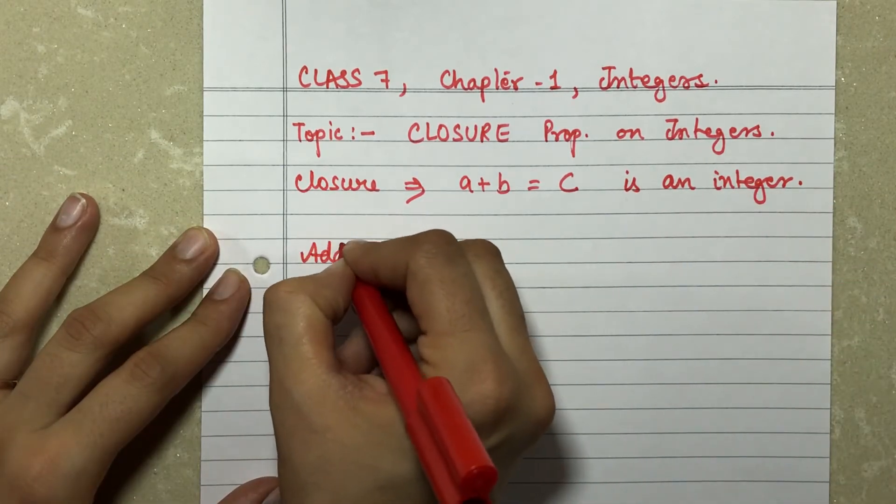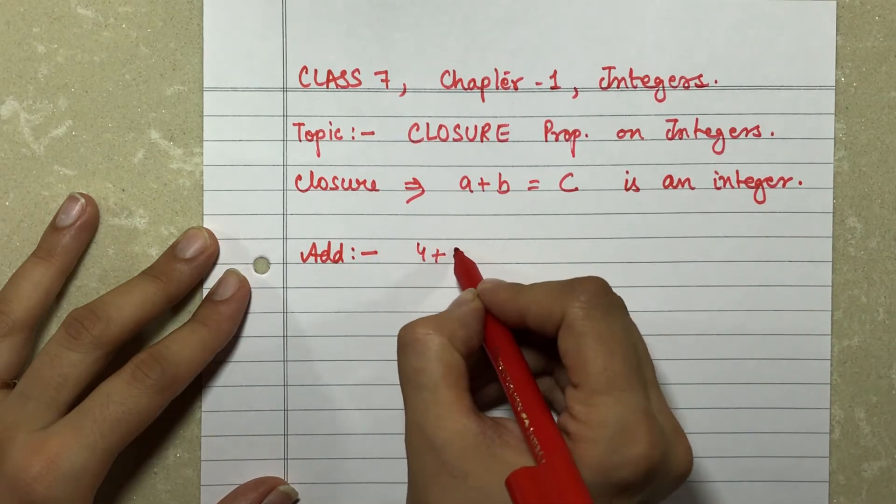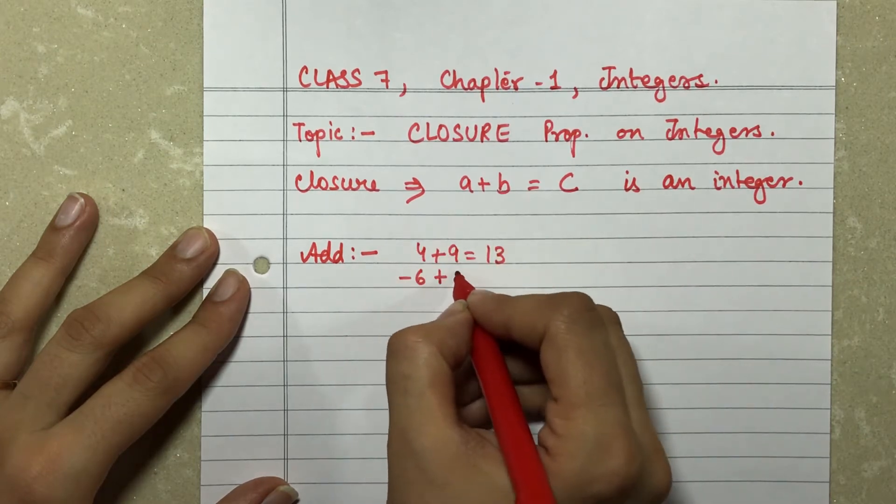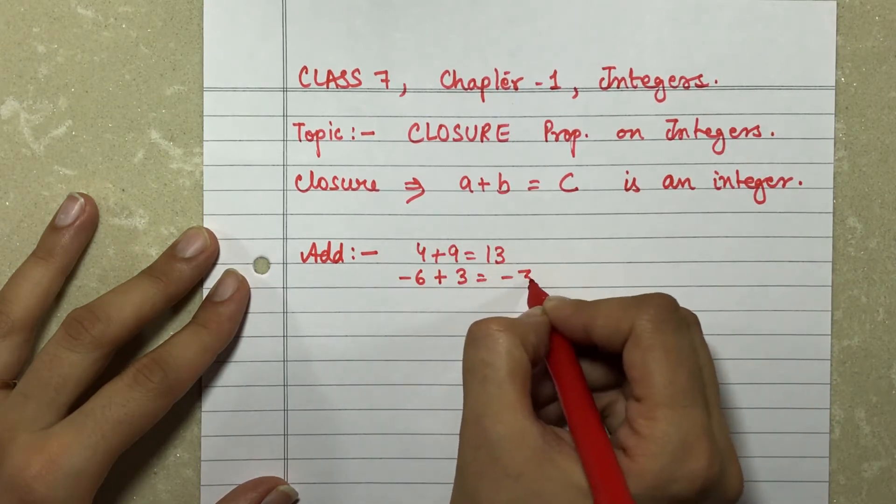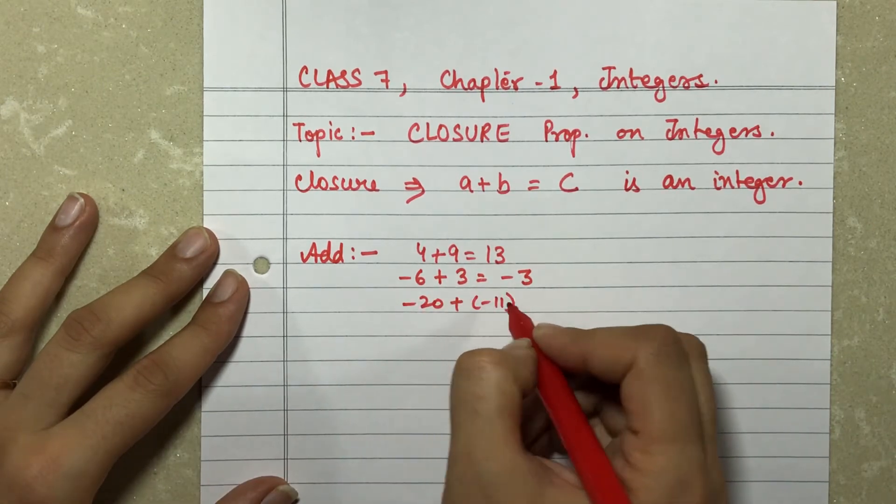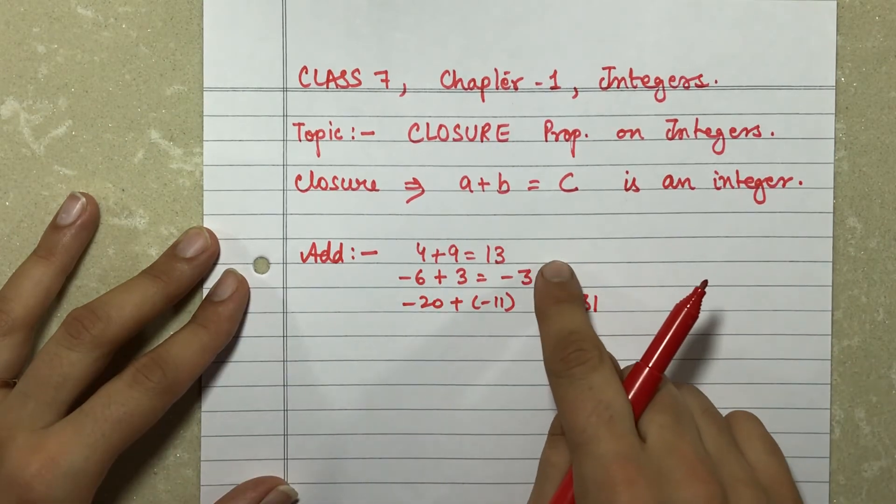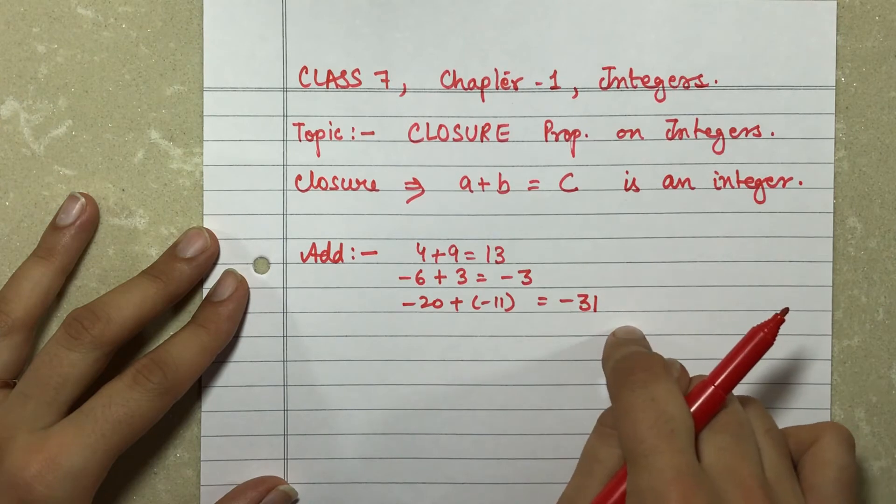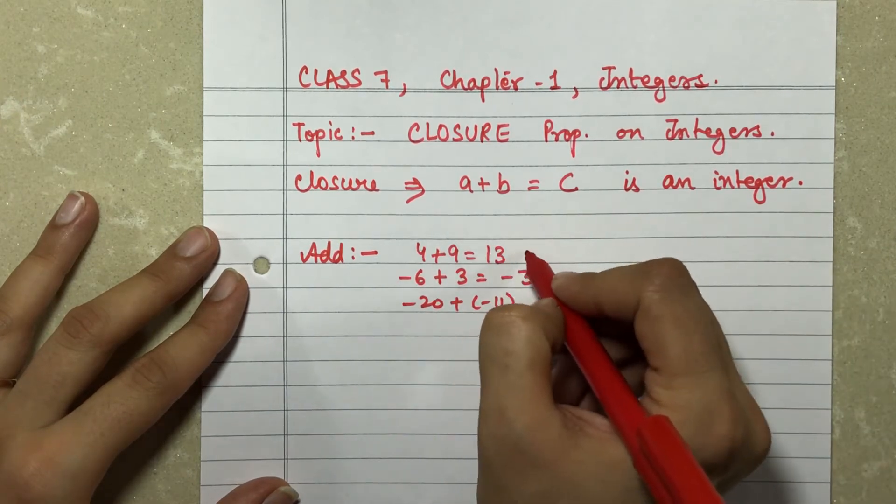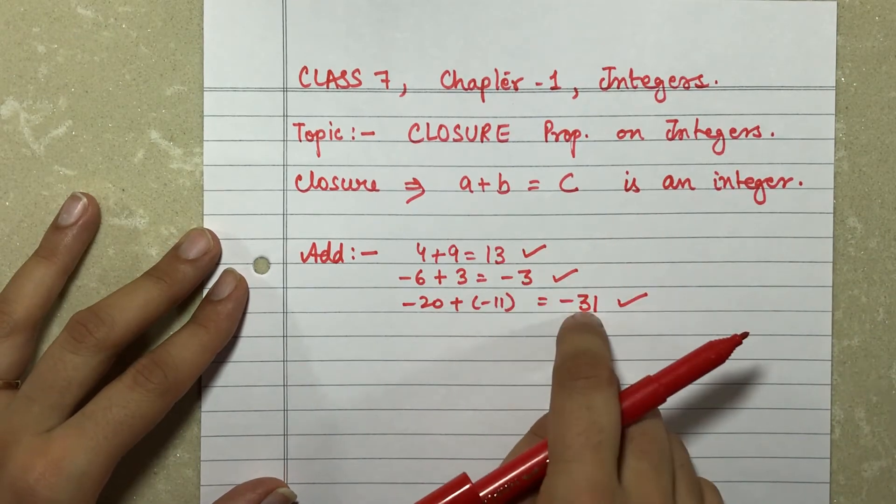If I have to add two integers, what is my answer going to be? 4 plus 9 is 13. Minus 6 plus 3 gives me minus 3. Or if I have minus 20 plus minus 11, this gives me minus 31. So I see my answer in all three cases: the answer that I get is an integer. 13 is an integer, minus 3 is an integer, and minus 31 is also an integer.